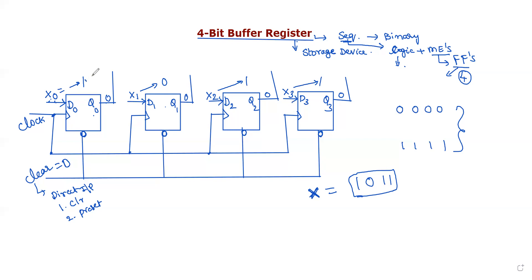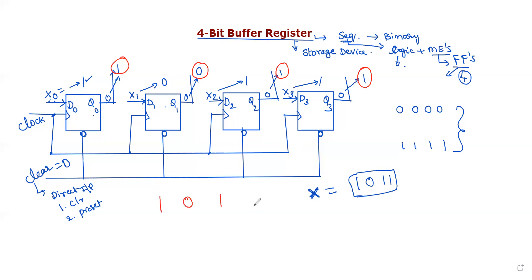After the clock pulse, the next state value for the first flip-flop is 1, for the second flip-flop is 0, for the third flip-flop is 1, and for the fourth flip-flop is 1. So the final output is 1,0,1,1 — which is the same as the input data we applied. This confirms the buffer operation.